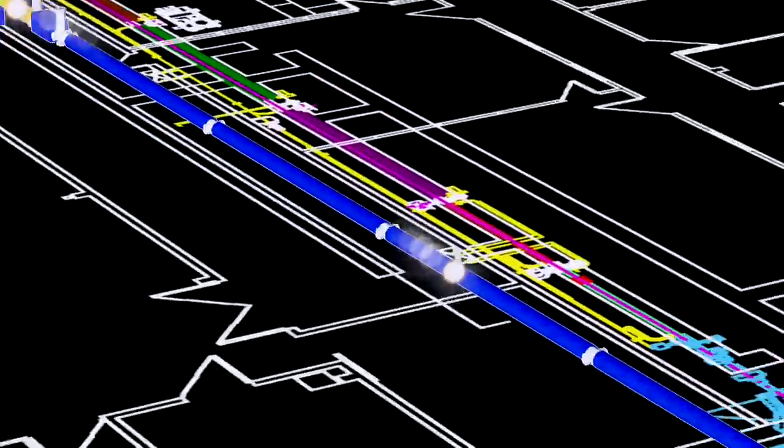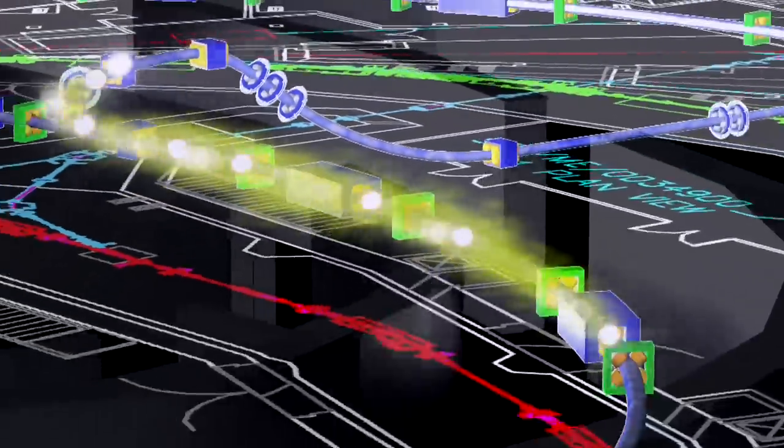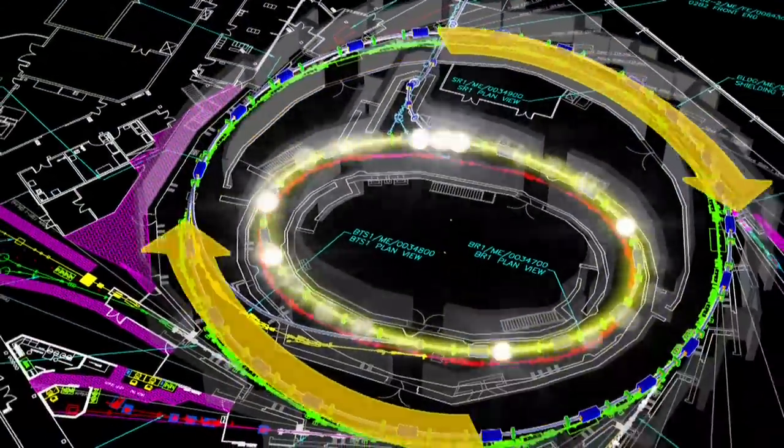An electron gun fires bunches of electrons through steel tubes into the booster ring. Microwave energy is then used to accelerate the electrons up to nearly the speed of light.